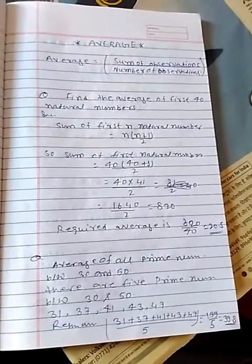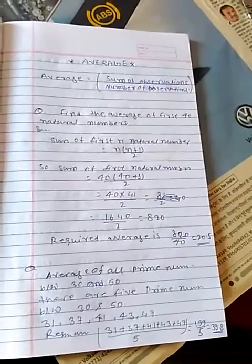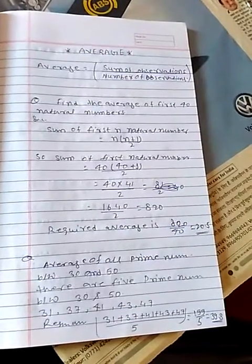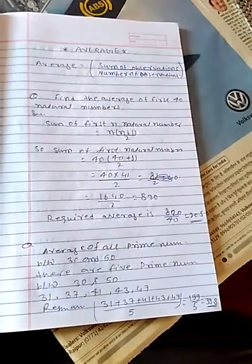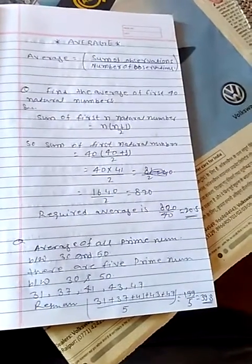For the average of prime numbers between 30 and 50, there are 5 prime numbers: 31, 37, 41, 43, and 47. Sum of all these numbers divided by 5 gives us 199 divided by 5, which equals 39.8.